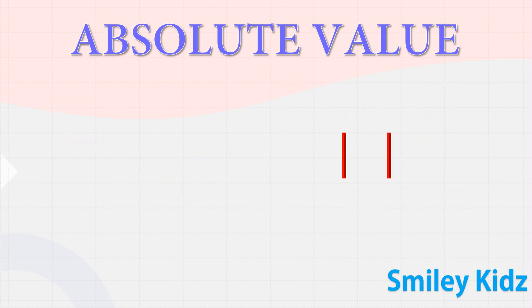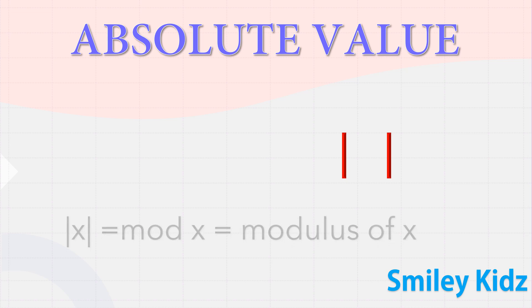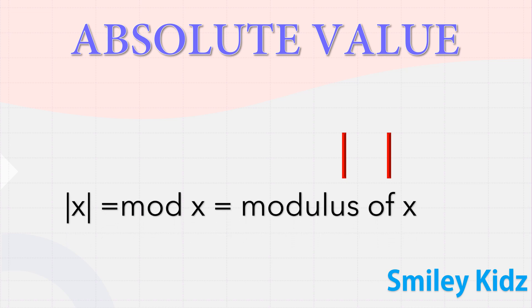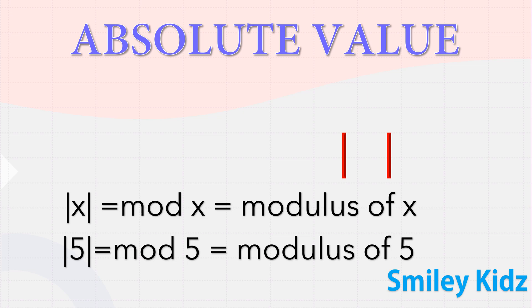Representation of absolute value: absolute value is represented as two vertical lines, referred to as mod. For example, the absolute value of five is equal to mod five, or modulus of five. We can read it as mod five, modulus of five, or absolute value of five.